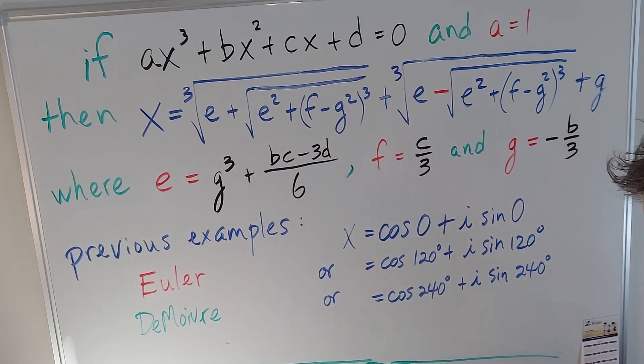Well the first one is the easiest. cos(0) is 1, sin(0) is 0 so that just gives me 1 which was the real root, the one that we expected first of all.